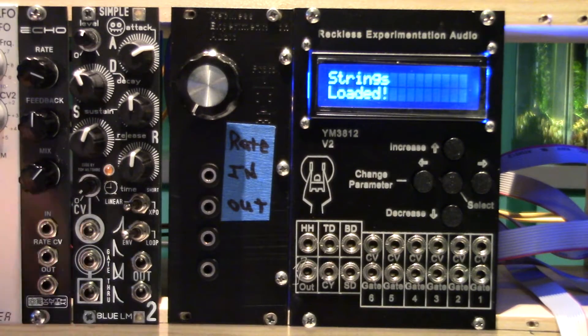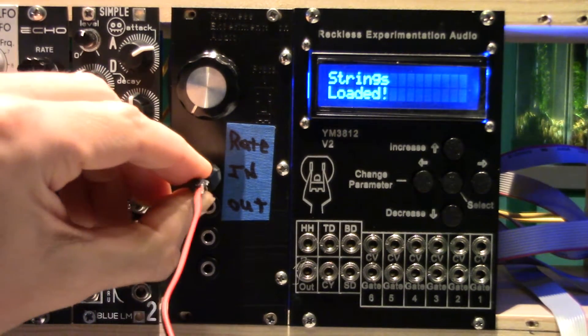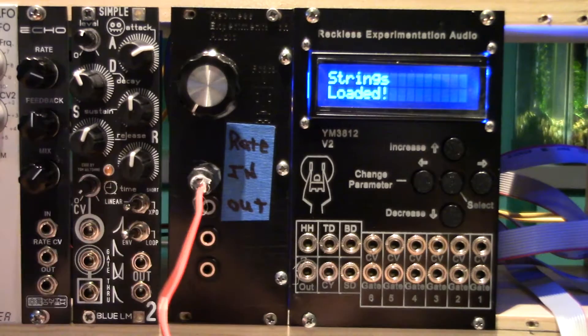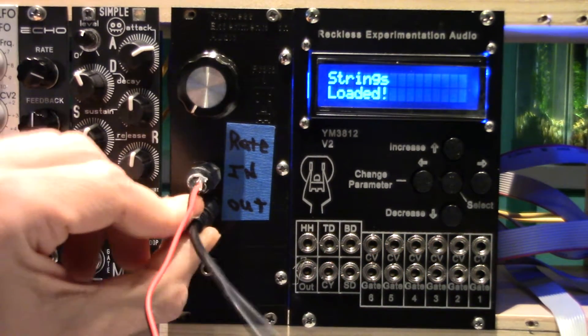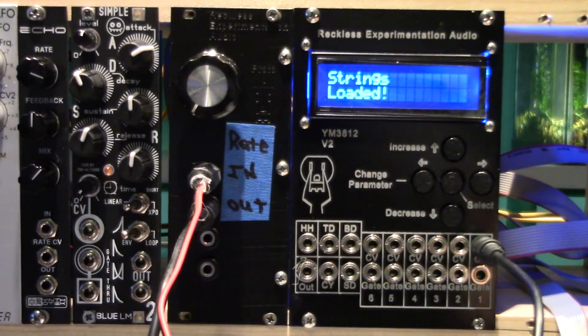Once satisfied with initial testing, mount in your enclosure. Connect up the inputs and outputs. Today we are using a QNexus for CV and gate generation and a YM3812V2 for sound generation.